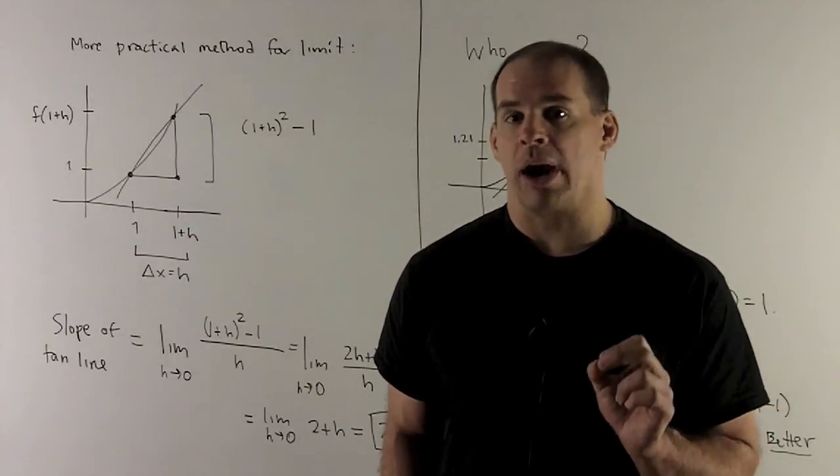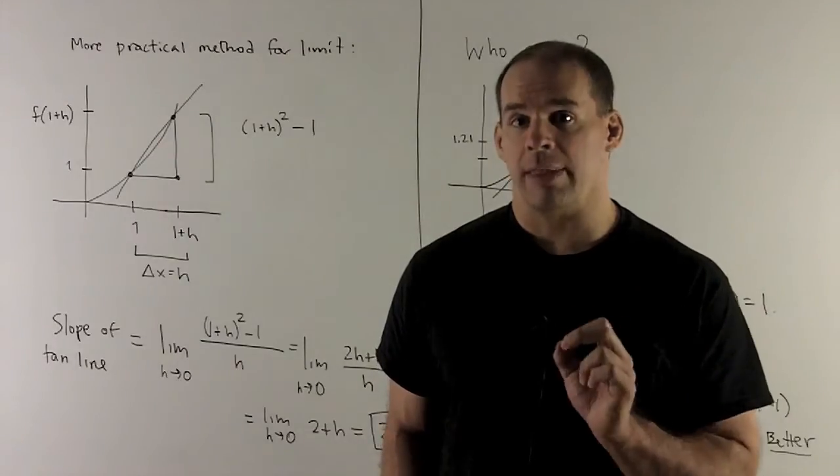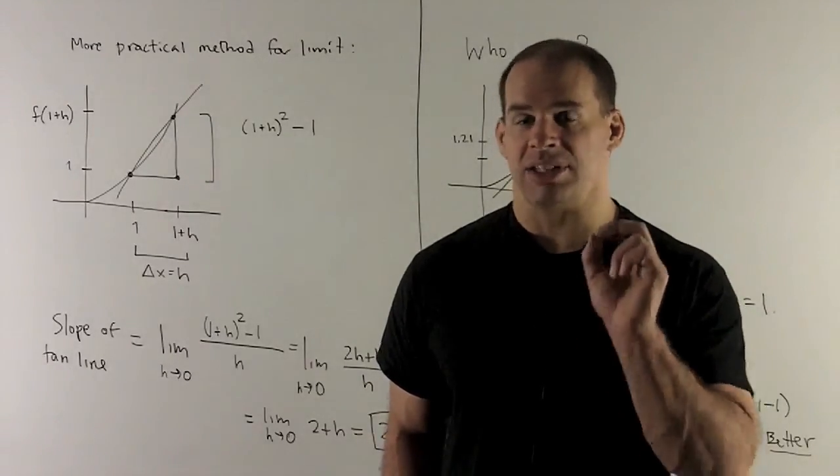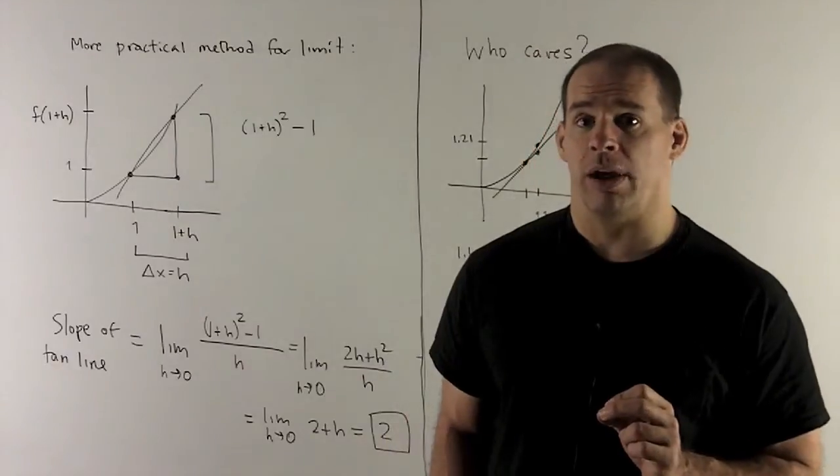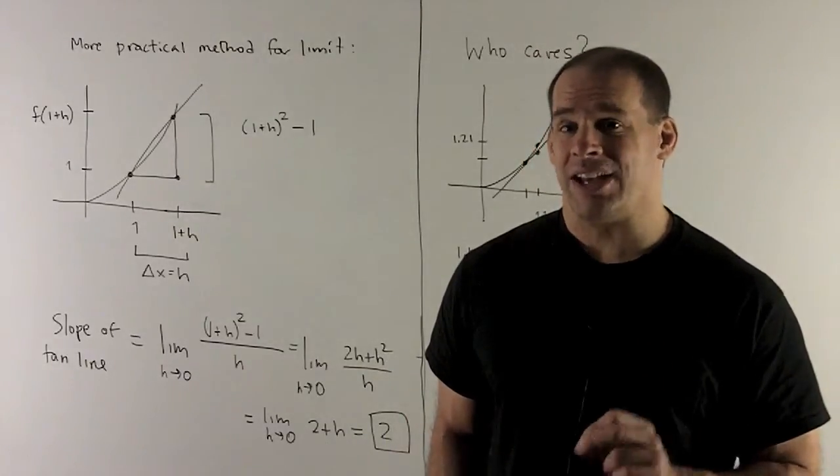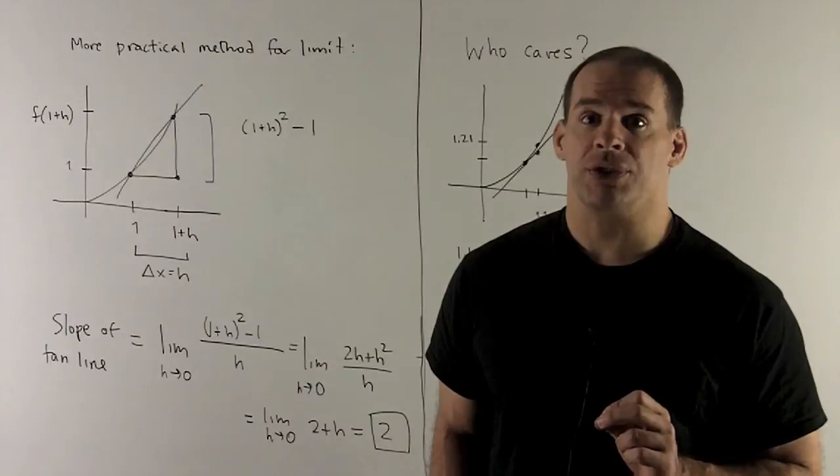And then the bottom is just going to be h. So the h divides nice into my top, leaving me with 2 plus h. As h goes to 0, I'm looking at an answer of 2.